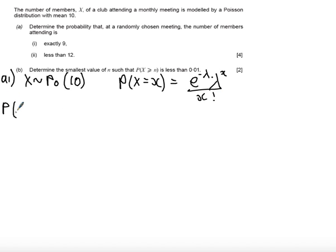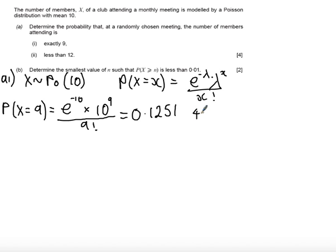So then the probability that X equals 9 is e^(-10) × 10^9 / 9!. If we type this into our calculator carefully and make sure we don't make any silly errors, you should get an answer of 0.1251 to 4 decimal places.